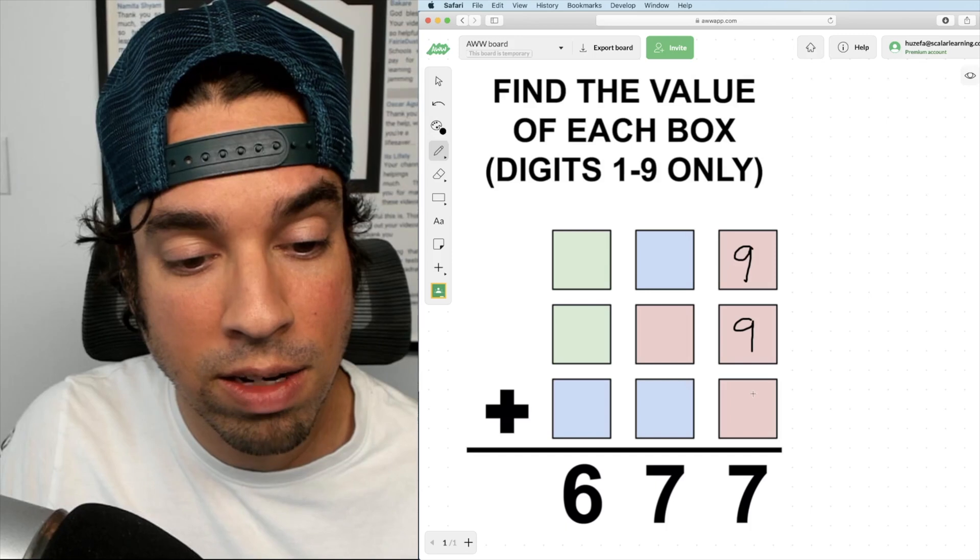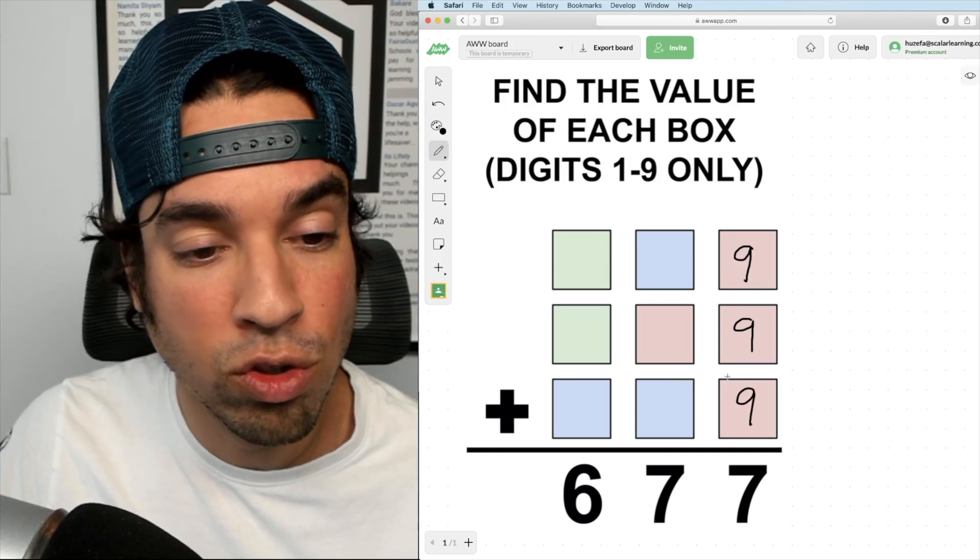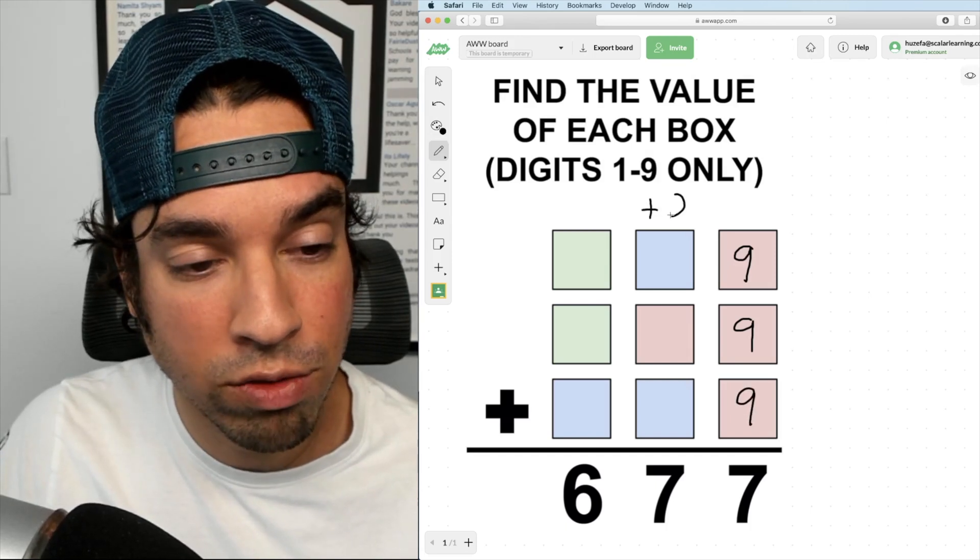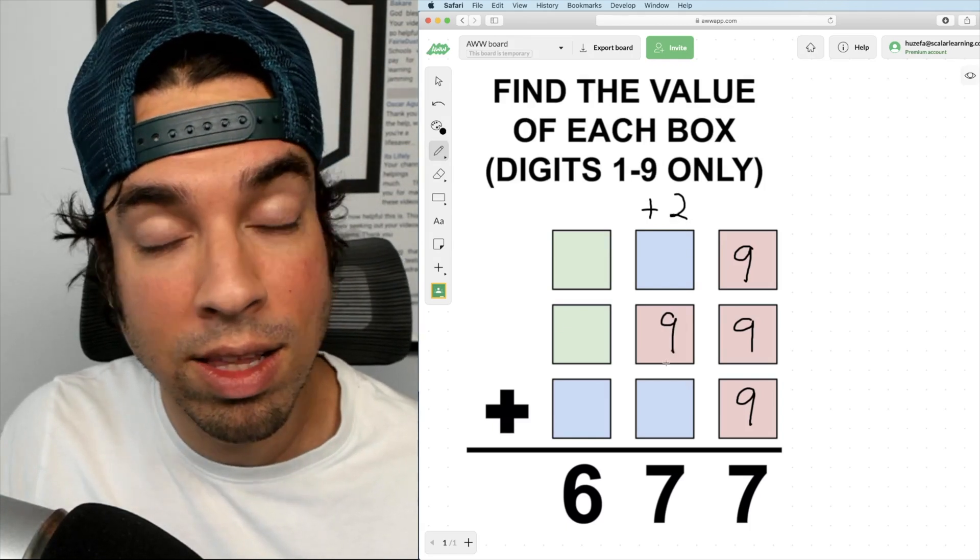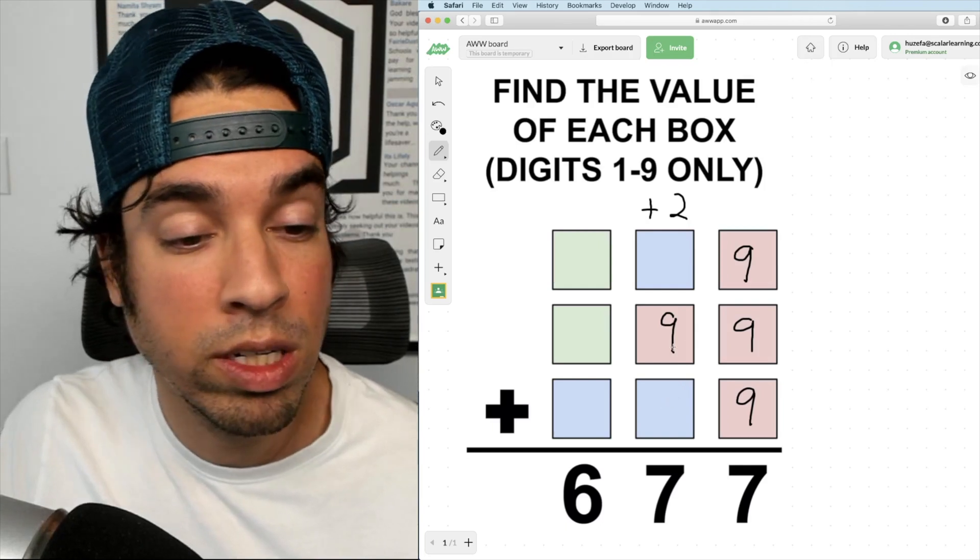So we got nine, nine, and nine. Nine plus nine plus nine is 27 with a carry of two, which makes this nine as well. So now that means we've already got 11 in the second column. We can either get to 17 or 27.